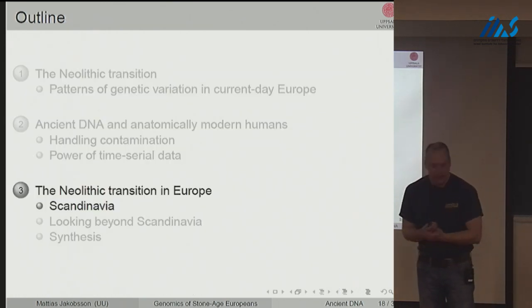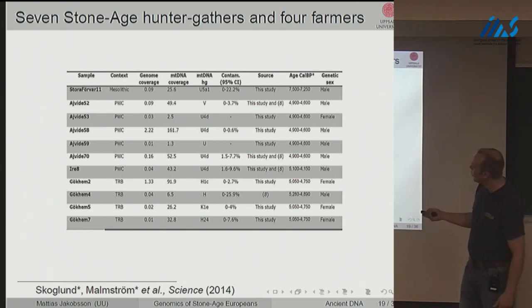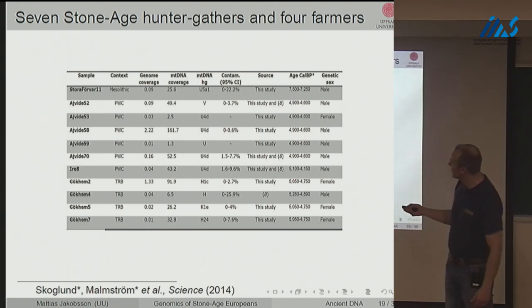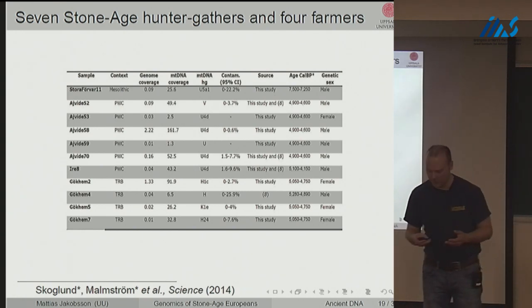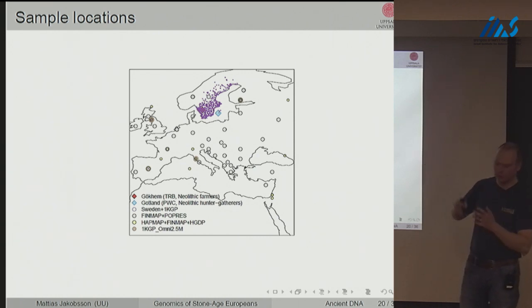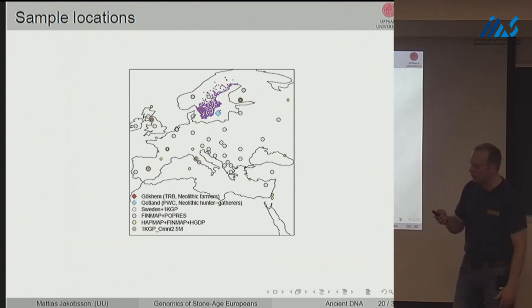Let's jump into results. We studied seven hunter-gatherers from Scandinavia and four farmers from Scandinavia. Some have low coverage — a few percent of the genome — and some have one-times coverage. Most are about 5,000 years old, while one individual is about 7,500 years old. The hunter-gatherers are from the island of Gotland in the Baltic Sea, and the farmers are from the west coast of Sweden — corresponding to the cultural groups I described earlier. All other dots are modern-day reference populations used to project the ancient genetic signatures onto a two-dimensional map.